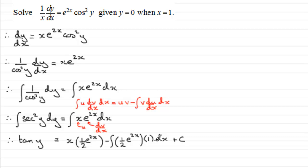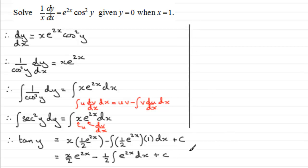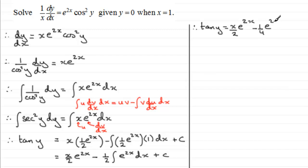Now we need to integrate this, so let's tidy it up. We've got x over 2 times e to the 2x minus a half times the integral of e to the 2x with respect to x, plus the constant c. Carrying on integrating, we get tan y equals x over 2 e to the 2x. Then integrating e to the 2x gives a half e to the 2x, and multiplying by minus a half gives minus a quarter e to the 2x. Adding all constants together, we call the overall constant b.